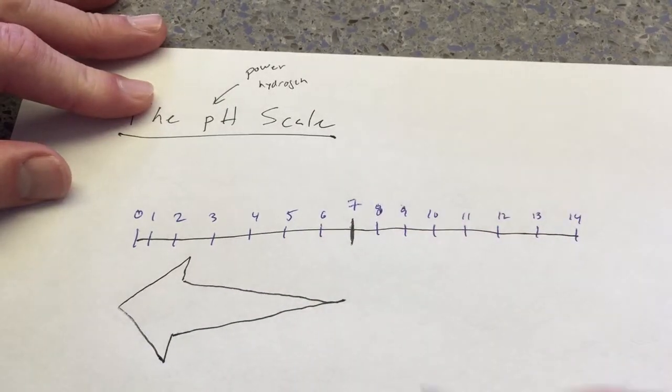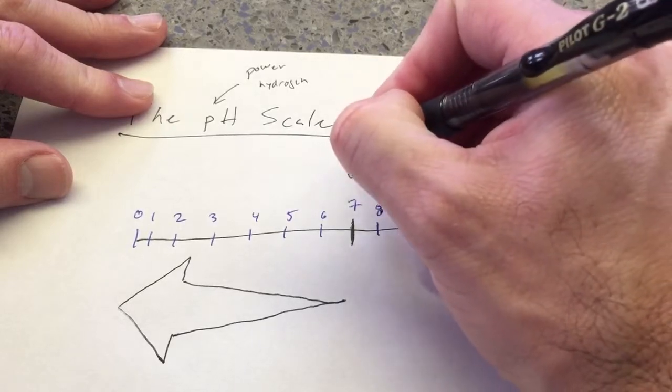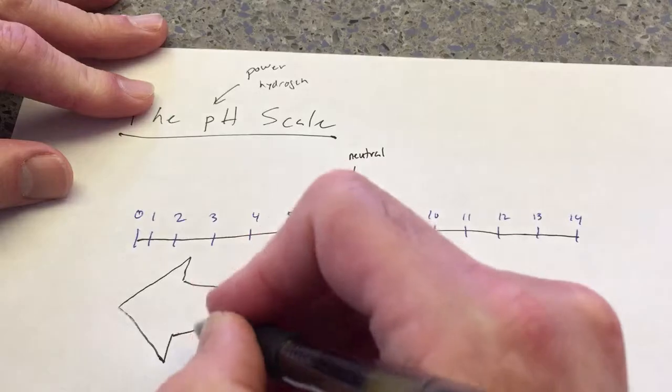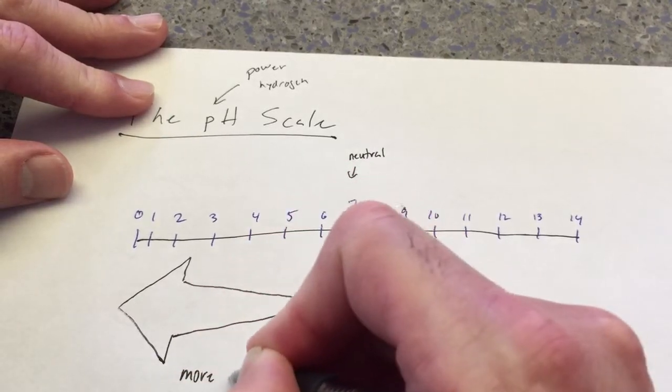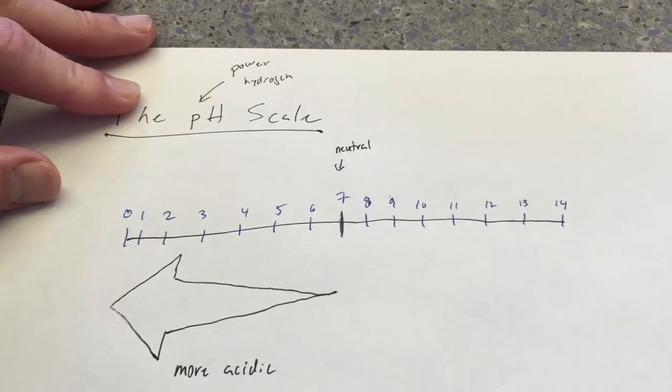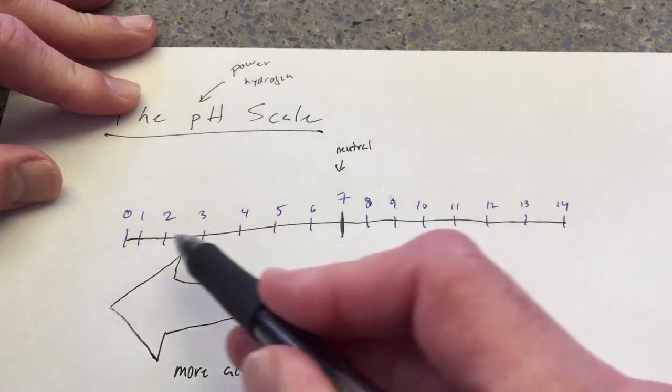You see how the arrow increases, gets bigger from right to left. Now that is to indicate that as we go from pH 7, which is neutral, we get more acidic. So from 7 out towards 0, you get increasing acidity.